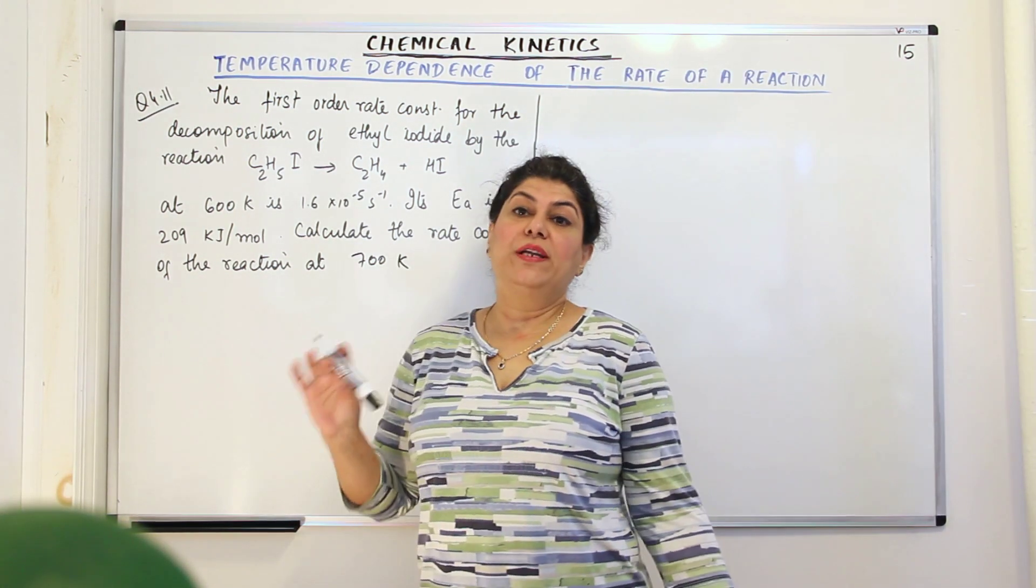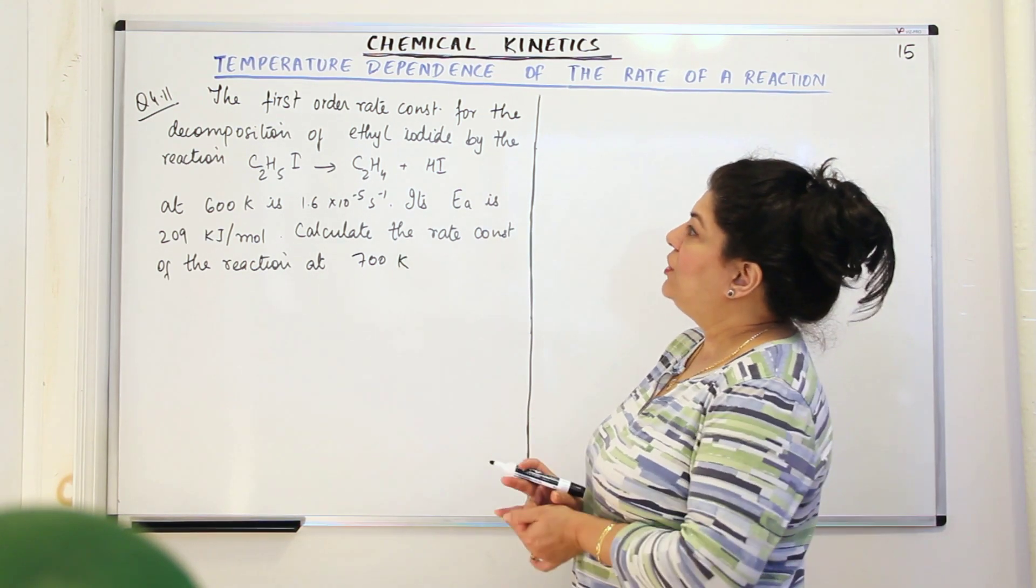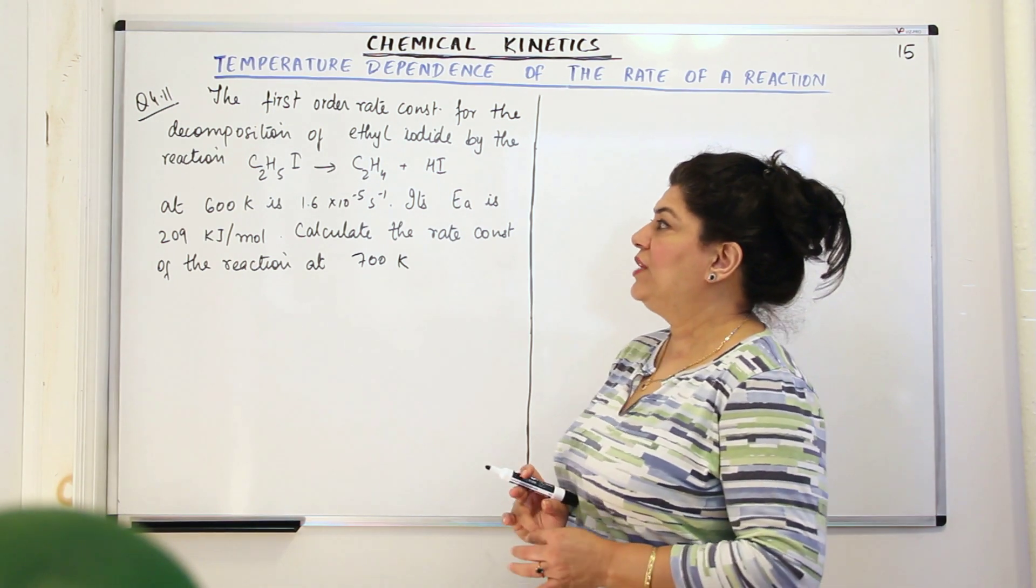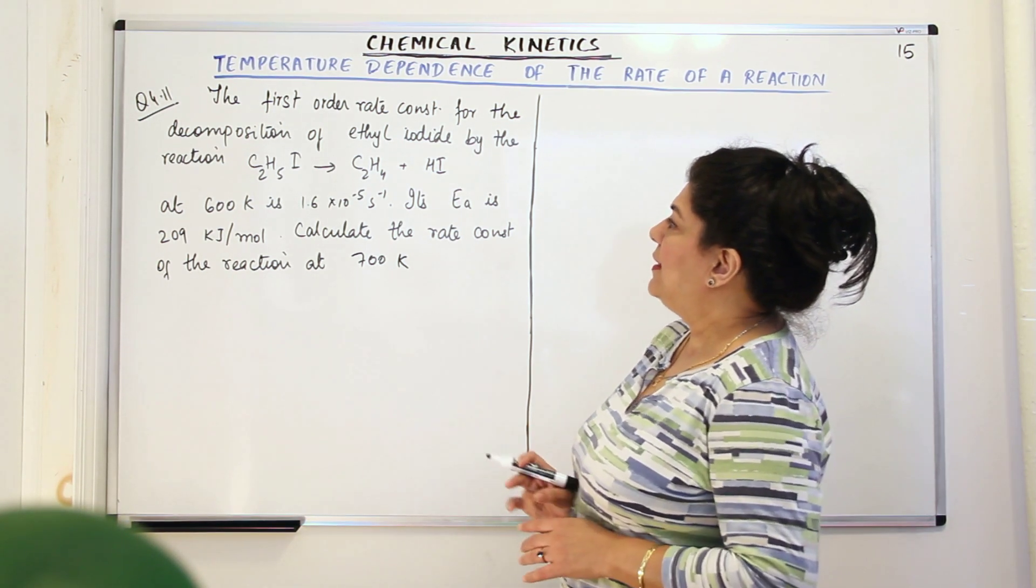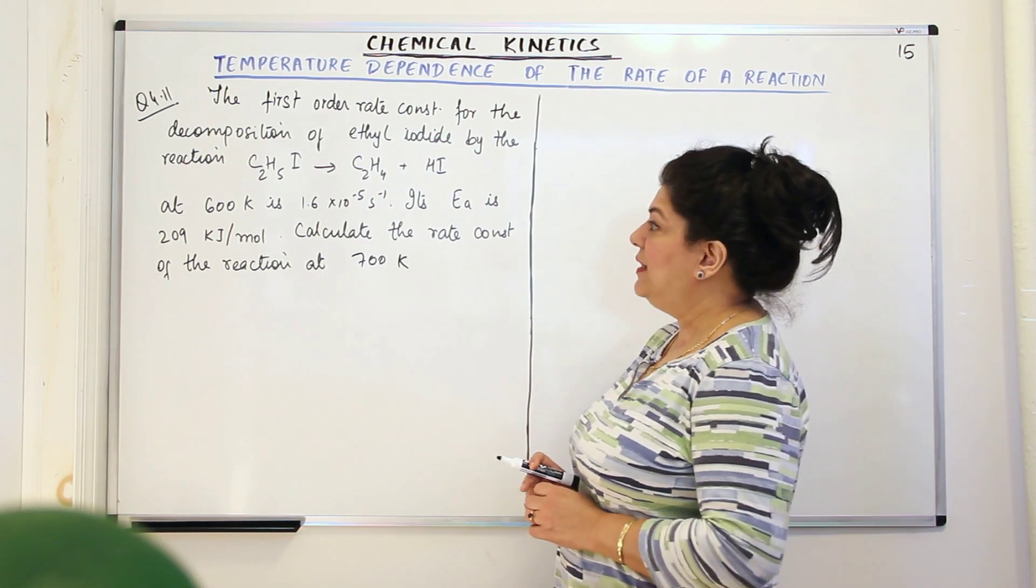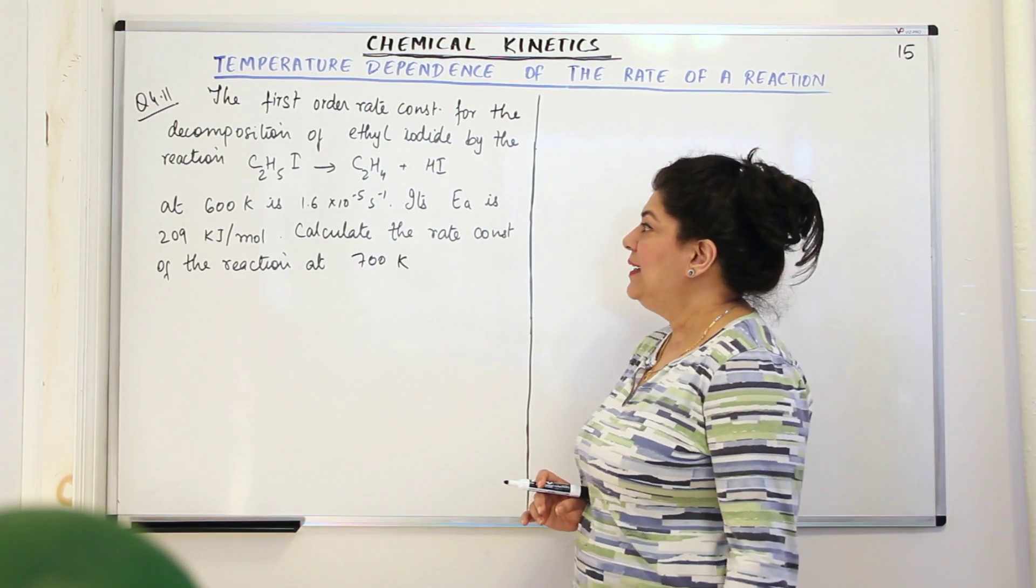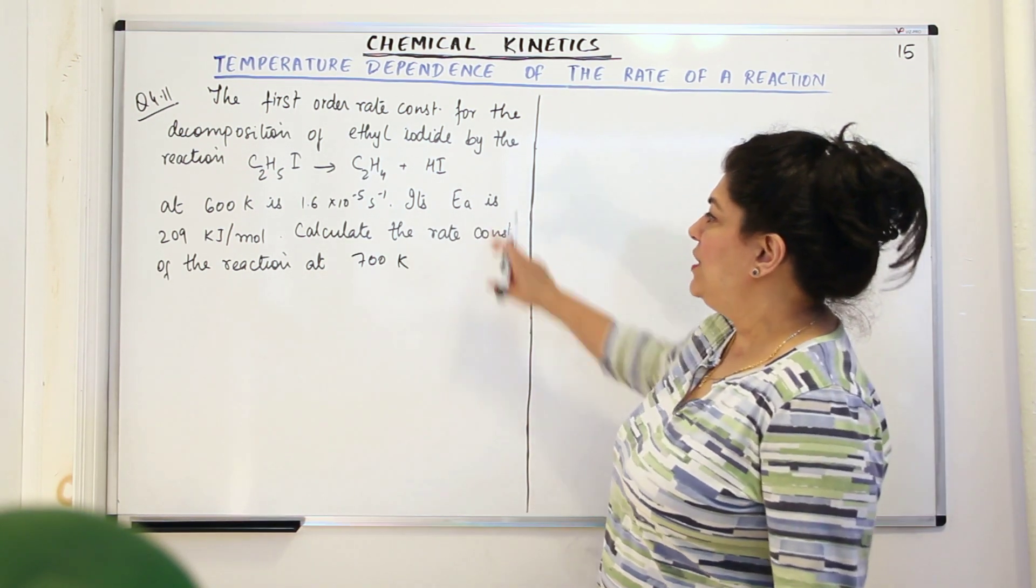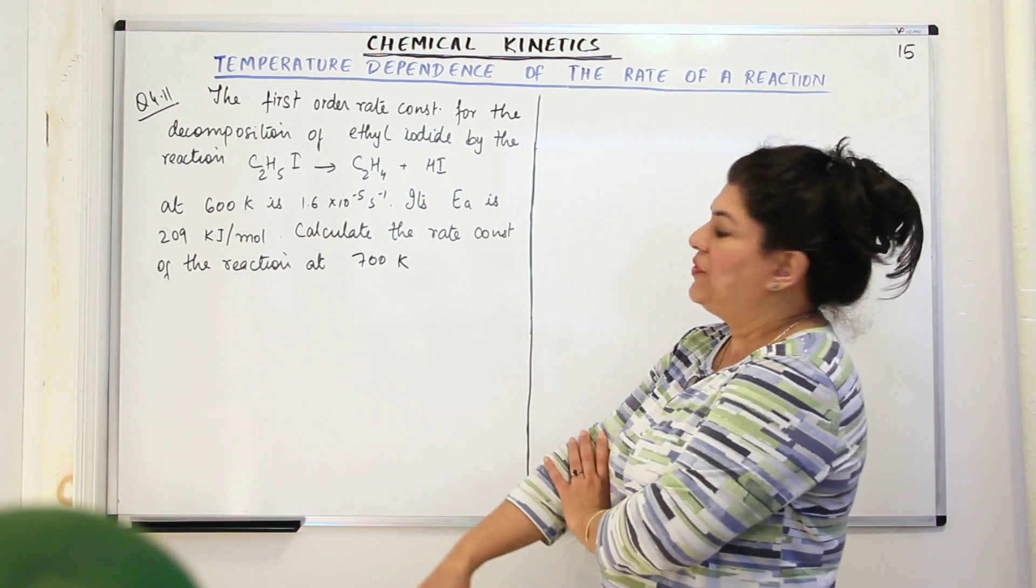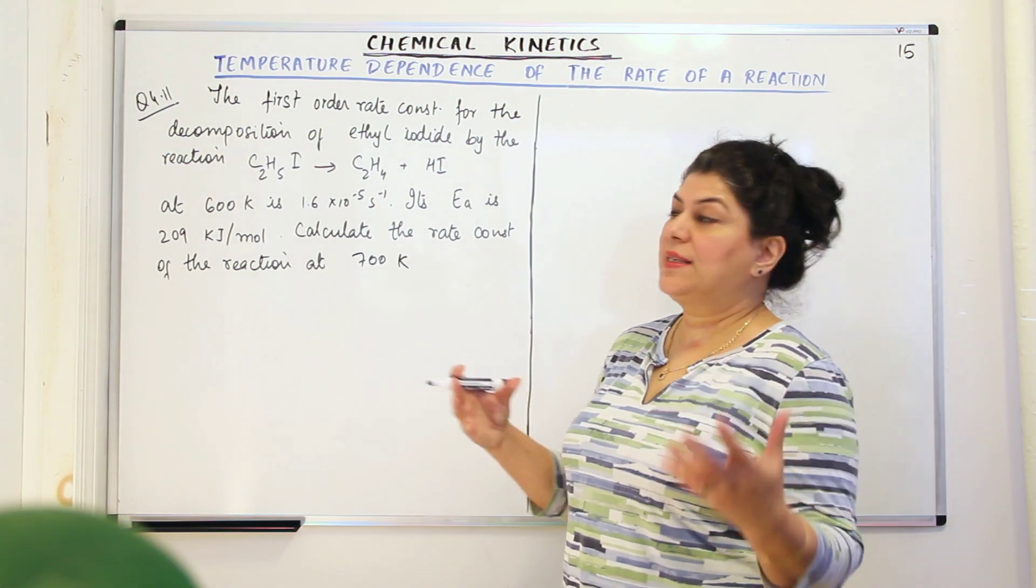Now this is question 4.11. This reads, the first order rate constant for the decomposition of ethyl iodide by the reaction C2H5I gives ethene, that is C2H4 plus HI, at 600 Kelvin is 1.6 into 10 to the power minus 5 per second. Its Ea activation energy is 209 kilojoules per mole. You have to calculate the rate constant of the reaction at 700 Kelvin.